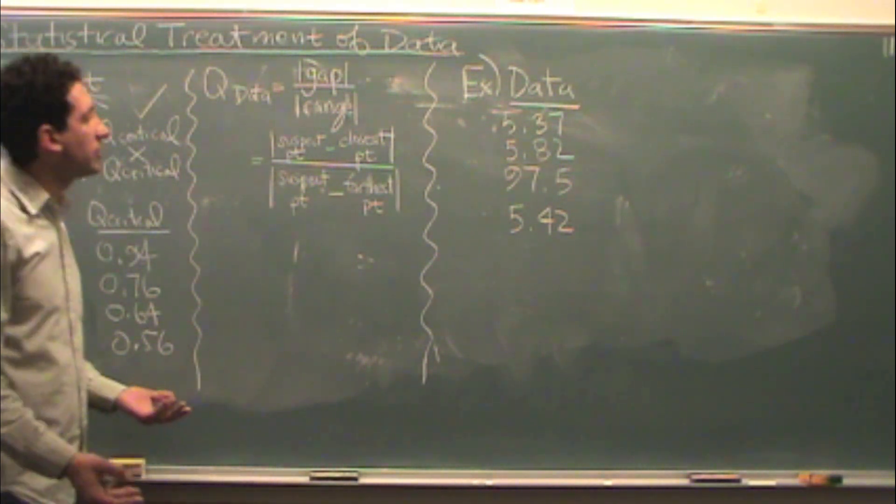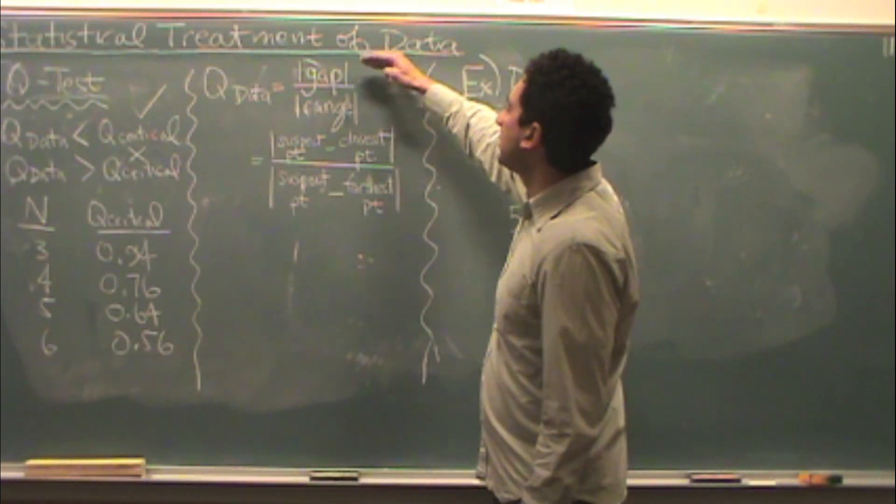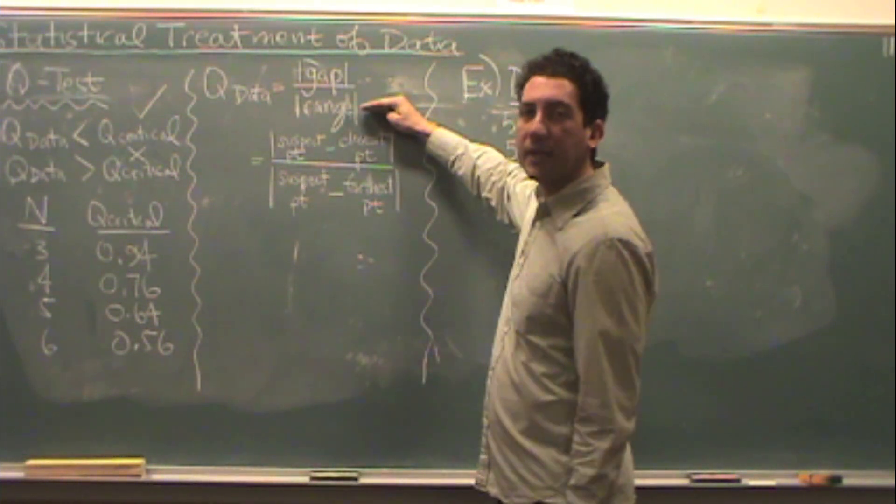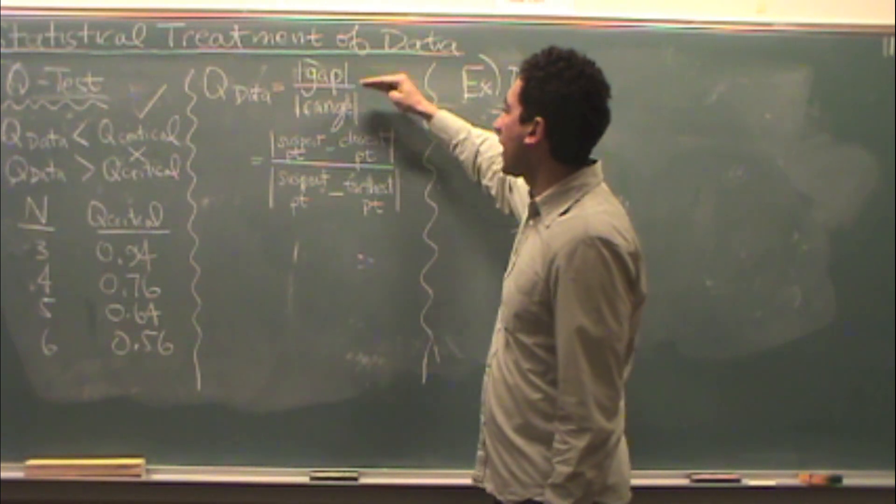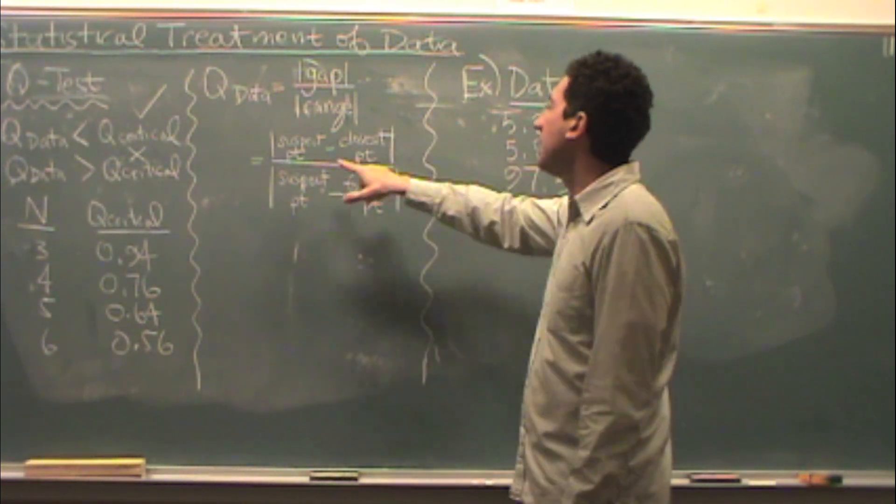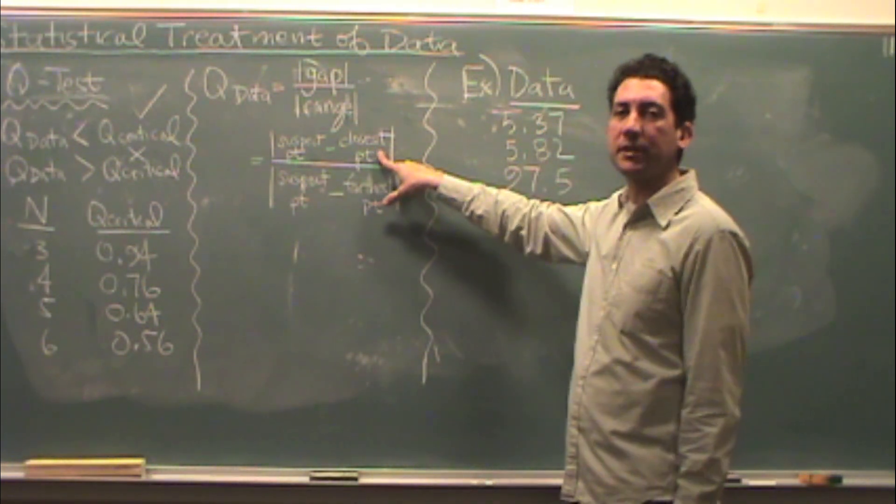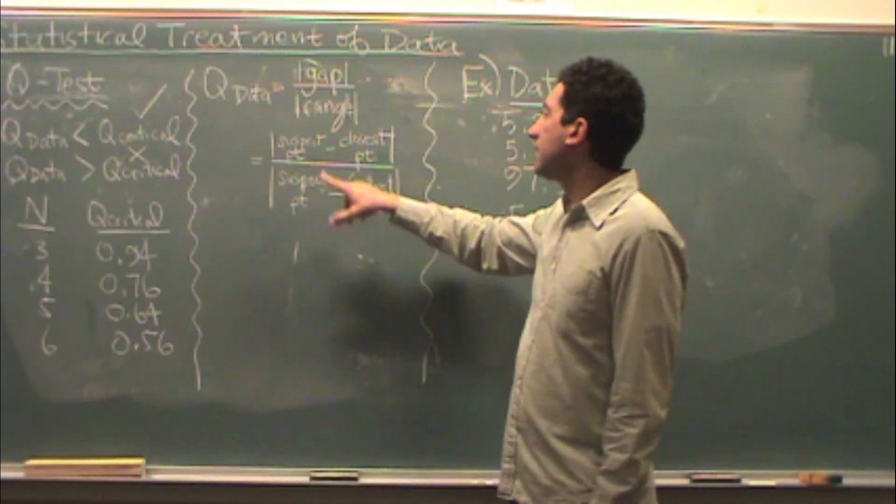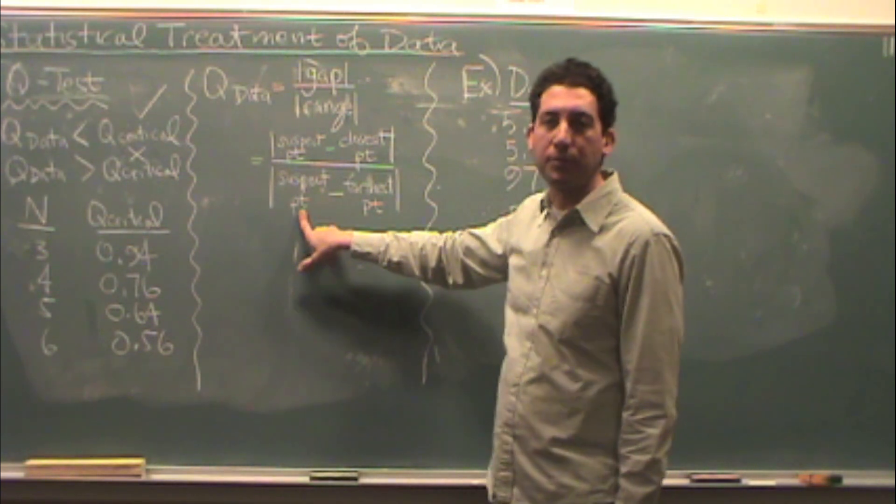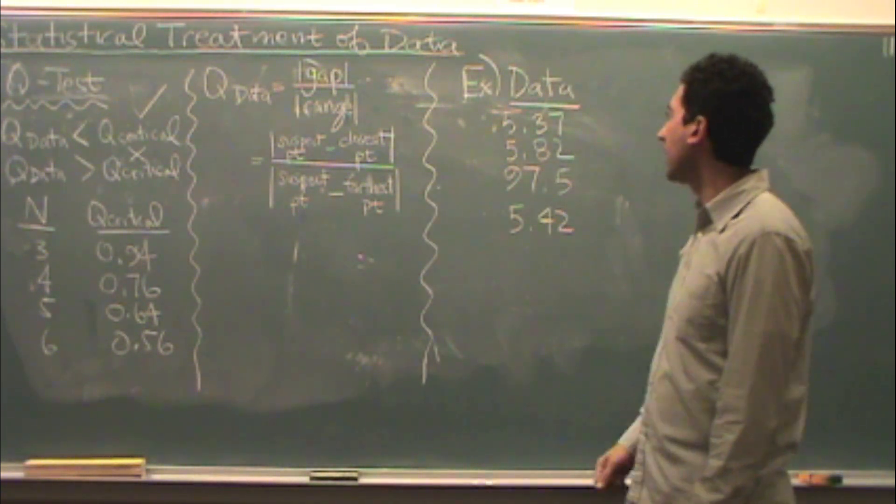What's Q data? That's the Q that you get from your actual data. Q data is the gap over the range - the absolute value of the gap over the absolute value of the range. The gap is your suspect point subtracted from the closest point to it. The range is your suspect point subtracted from the farthest point to it.